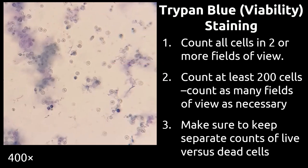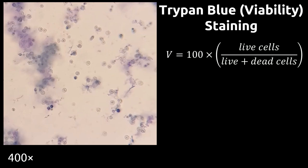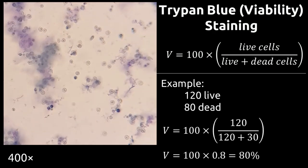To calculate viability, you want to count all of the cells over a couple different fields of view, keeping track of the number of living cells versus the number of dead cells in each field. For an accurate viability count, you want to count at least 200 cells. Viability is then calculated as 100 times the ratio of the number of live cells, divided by the total number of cells. So that would be your live plus dead.